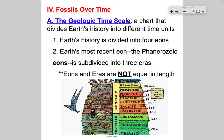Fossils have changed over time, and we use fossils to help put together the geologic timescale, which is a chart that divides Earth's history into units. Eons are the largest units, and there are four eons. The most recent is the Phanerozoic, and it's also subdivided into three eras. So your biggest unit is eons, and then it goes into eras.